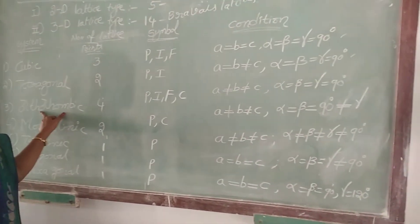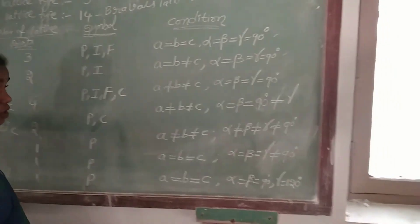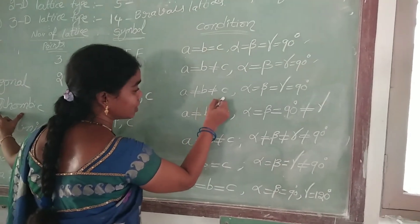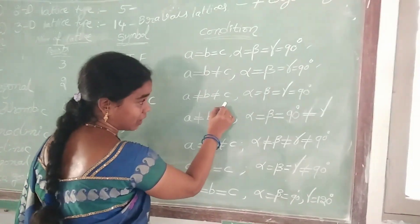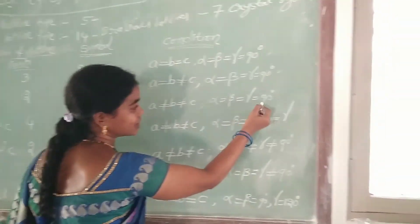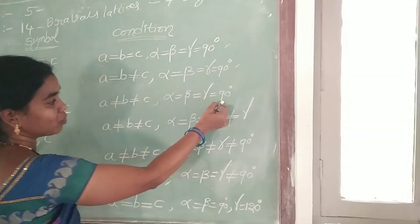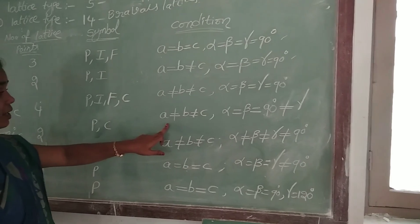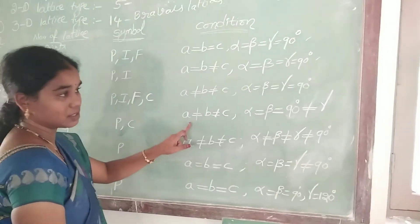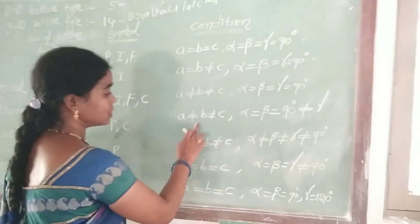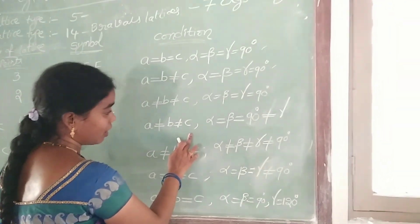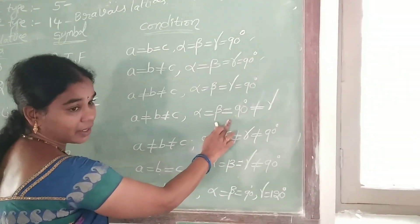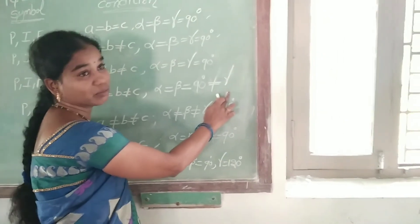Third one: orthorhombic crystal system. The condition is A not equal to B not equal to C, and alpha, beta, gamma are all equal to 90 degrees. Fourth one: monoclinic crystal system. The condition is A not equal to B not equal to C, and the angles alpha is equal to beta is equal to 90 degrees, but not equal to gamma.